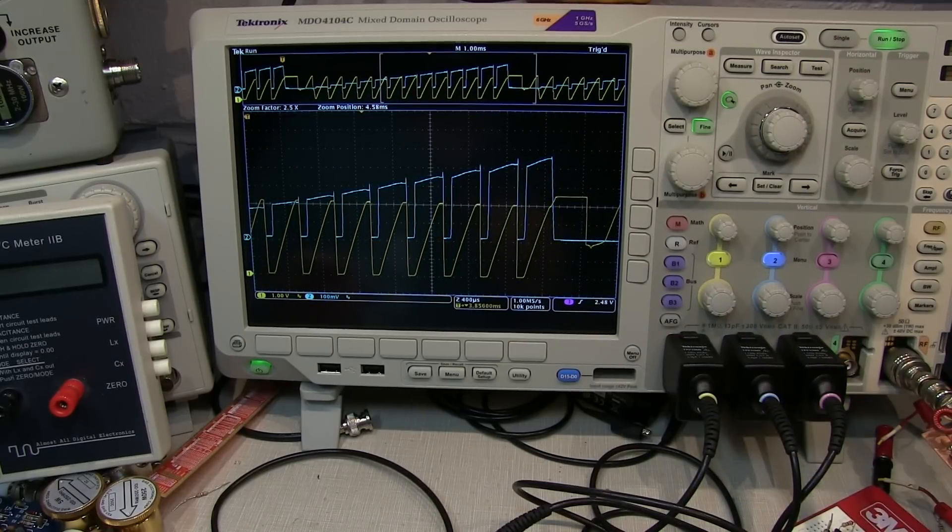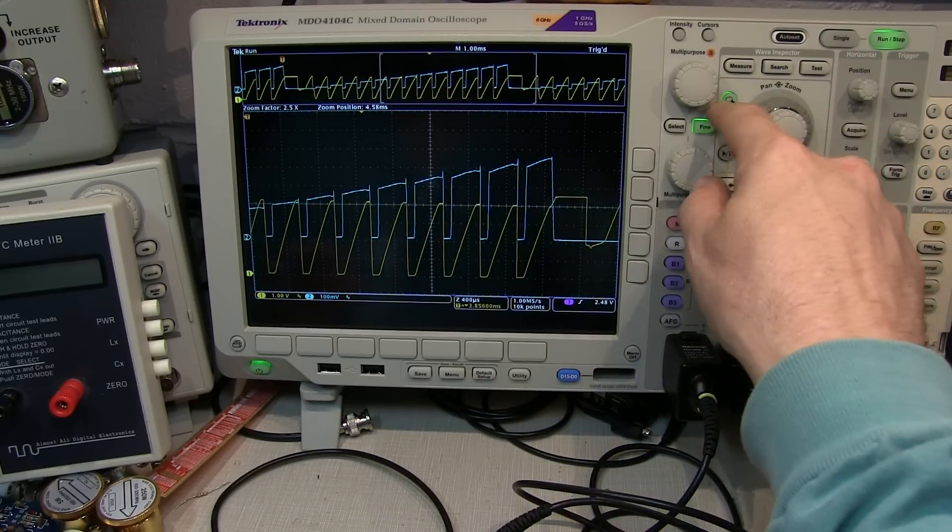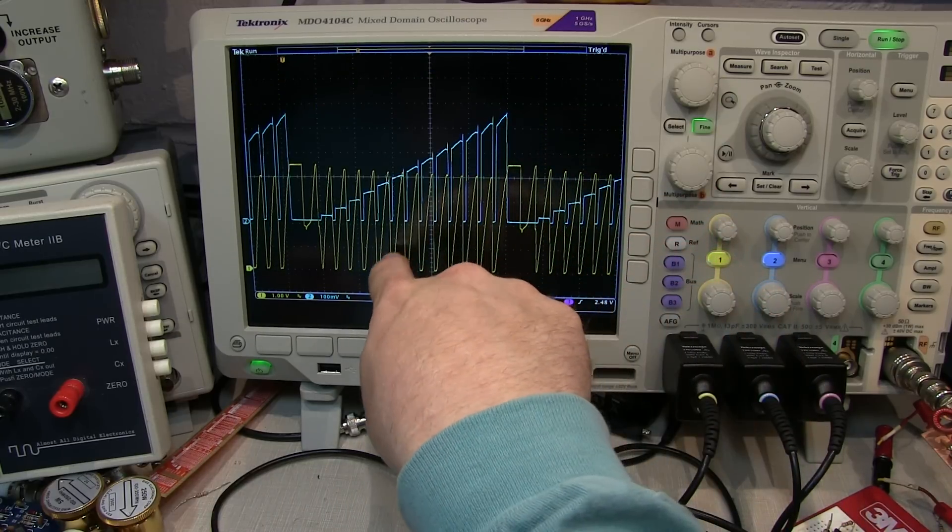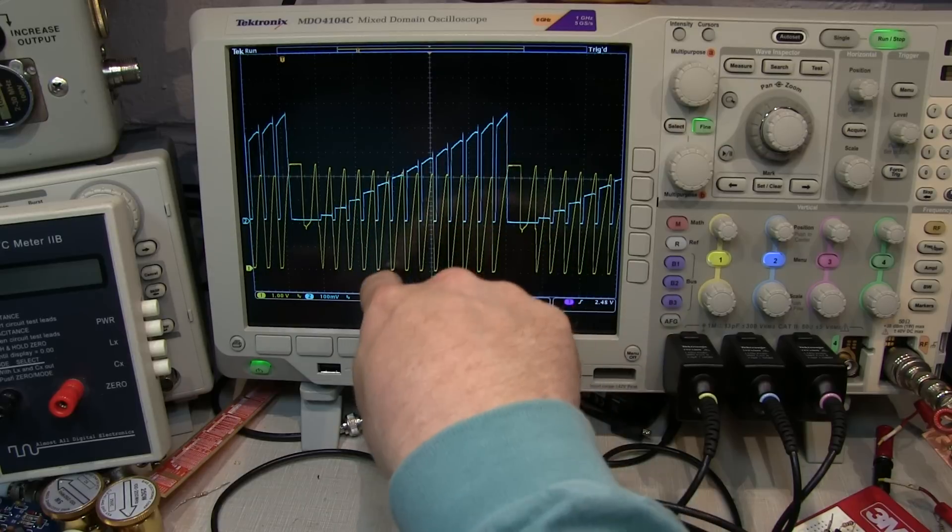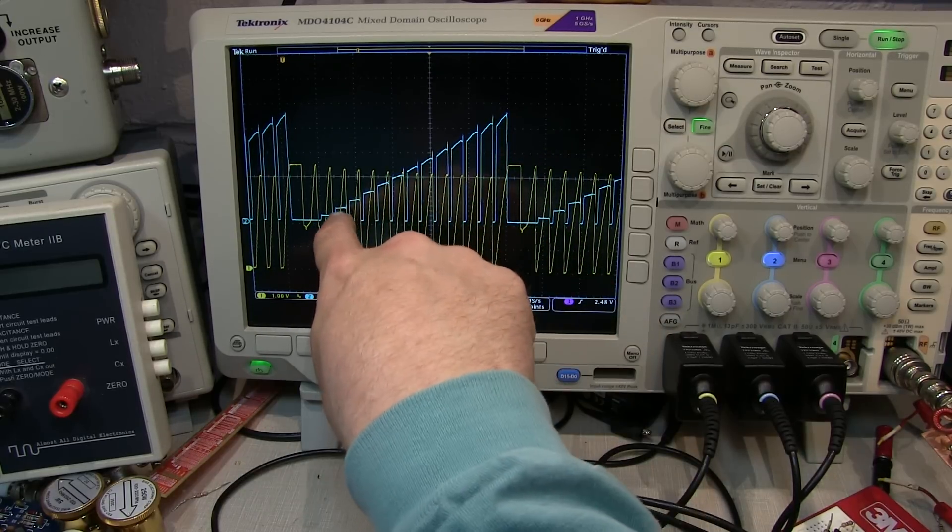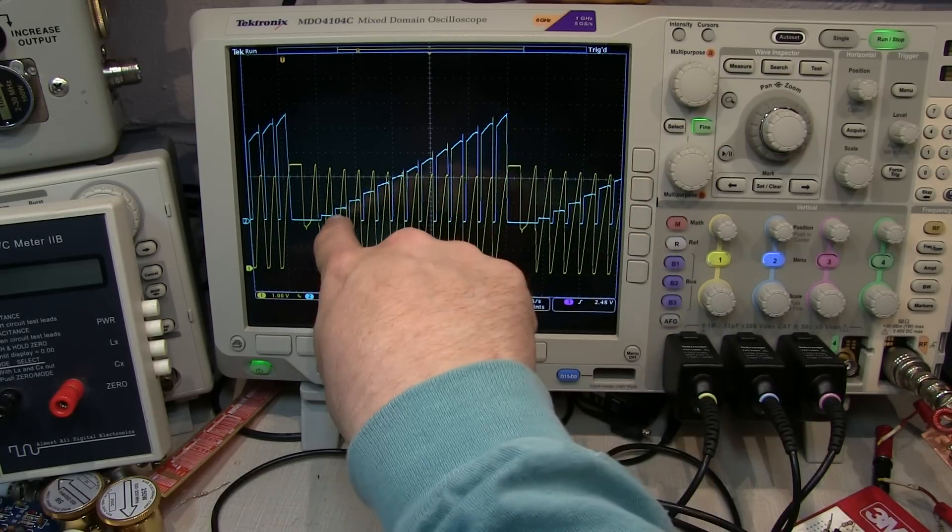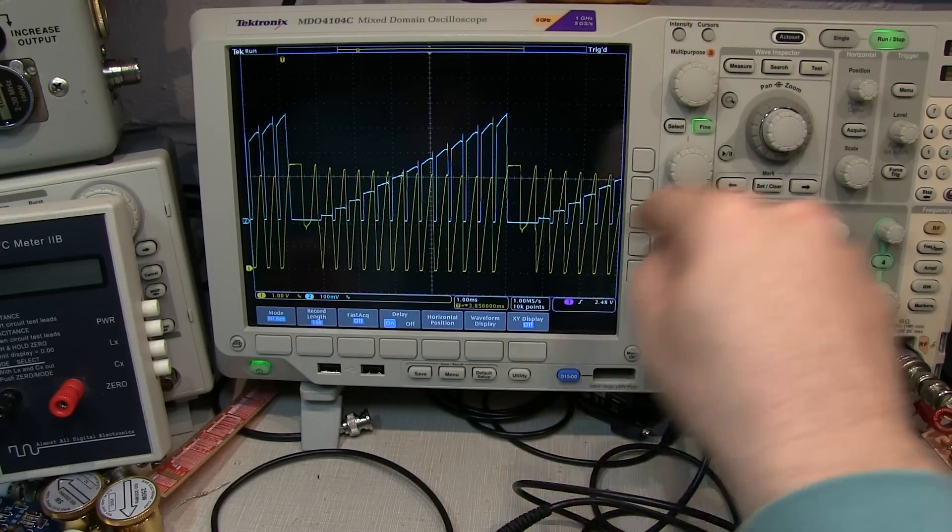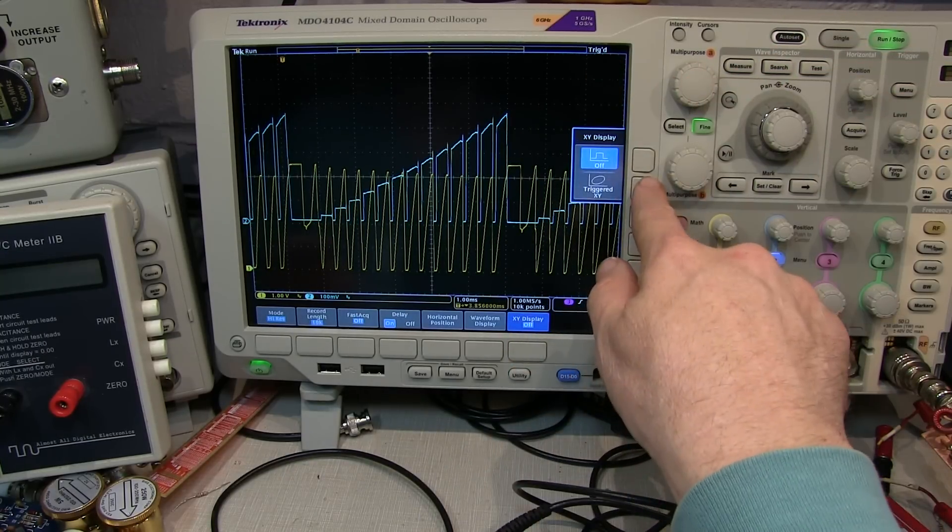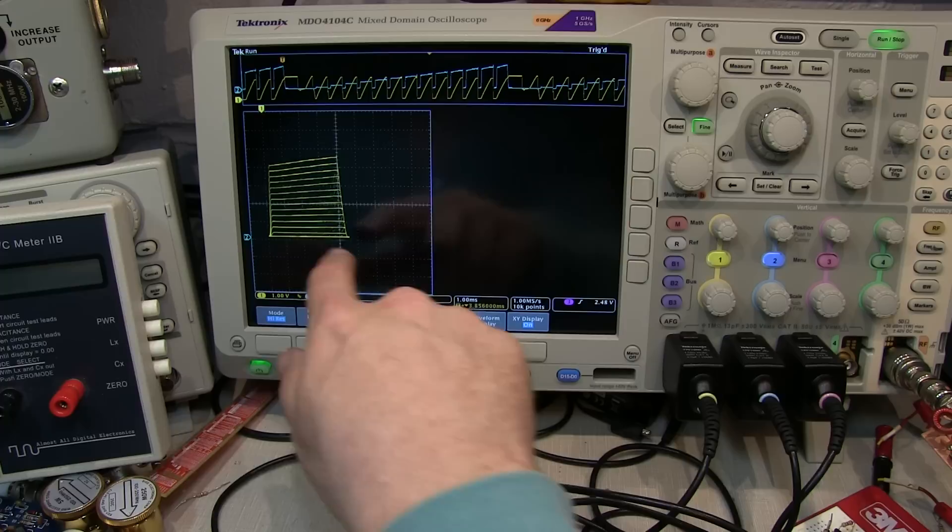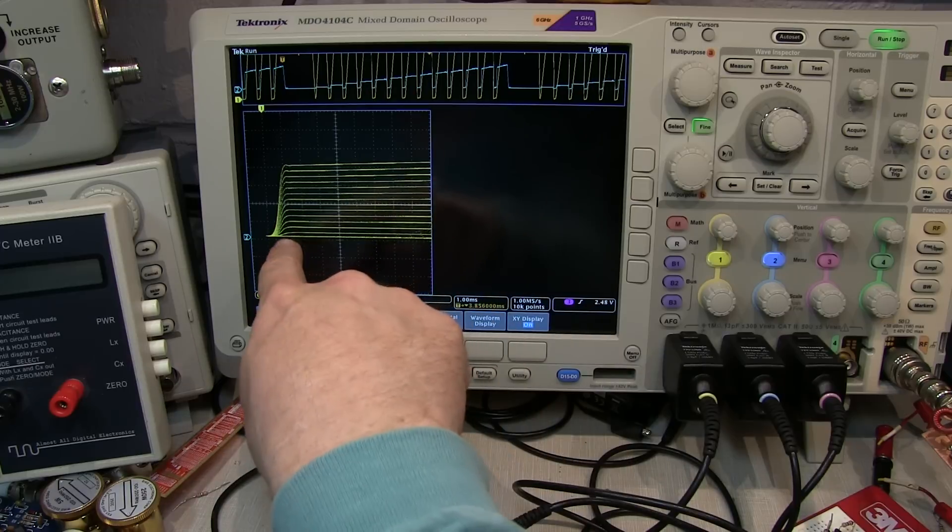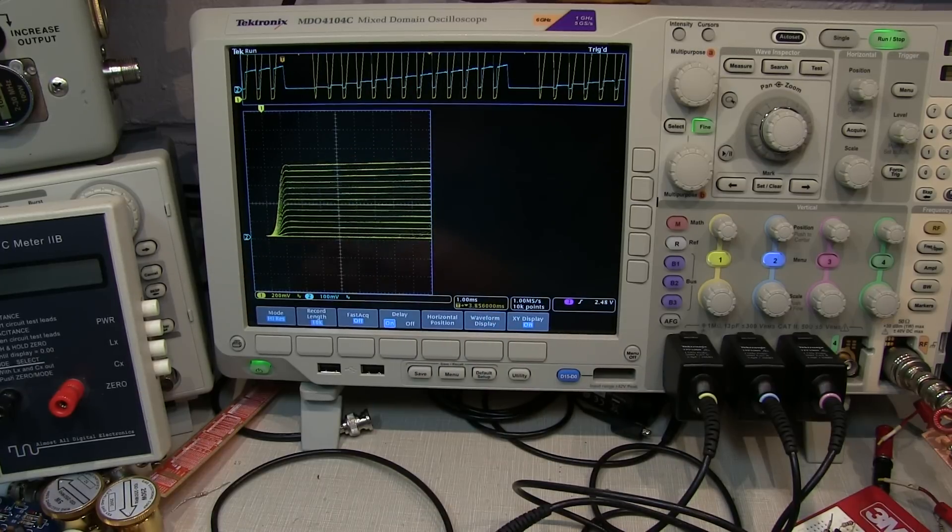To turn this into a curve tracer, we just need to change the display mode to be XY, so we'll use the collector emitter voltage as our X input and the collector current, or this voltage that represents collector current, to be Y. So we just go into our XY mode here, turn that on, and now we've got our curve tracer response. I'll just change our scale here so we get a more familiar family of curves with our test transistor in place.